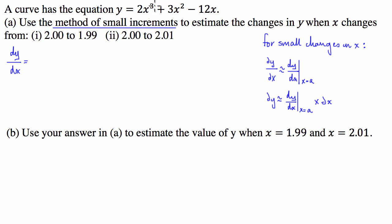So the derivative of this one is going to be a quadratic, it's going to be 6x² + 6x - 12, which can also be written as 6(x² + x - 2).